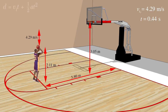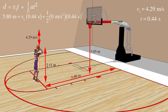Next, we can use the second equation to find the horizontal velocity of the ball. Let's plug in our values. After solving, we come to the conclusion that the horizontal velocity is equal to 13.18 meters per second.